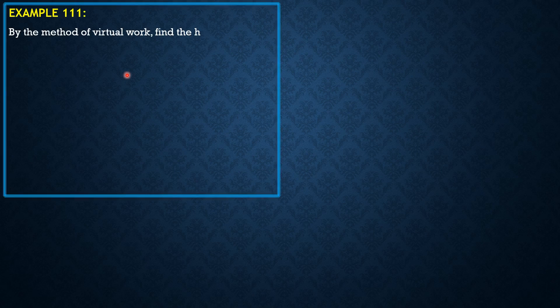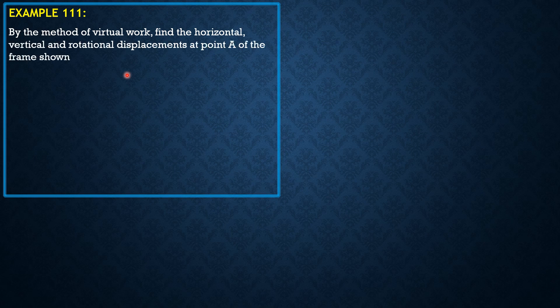By the method of virtual work, find the horizontal, vertical, and rotational displacements at point A of the frame shown. Use a modulus of elasticity of 200 gigapascals and a moment of inertia of 208 times 10 to the 6 millimeters to the 4th.